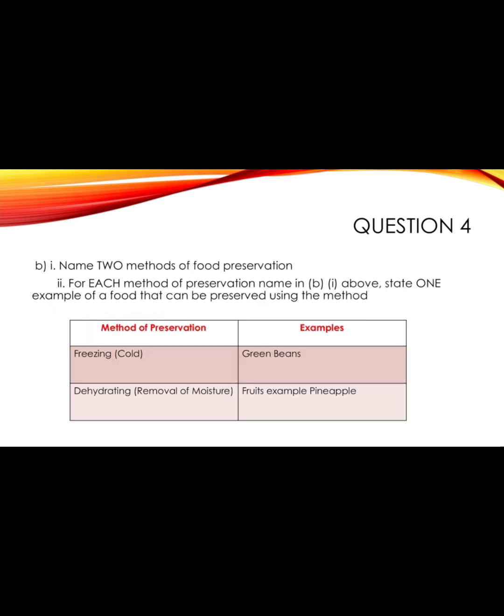Moving on to 4b: name two methods of food preservation, and for each method named, state one example of a food that can be preserved using this method. The two methods I selected are freezing, which is a cold type of preservation, and dehydrating, which involves the removal of moisture.